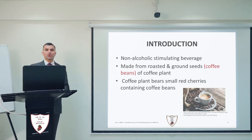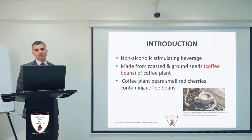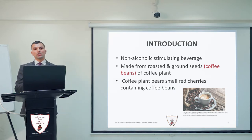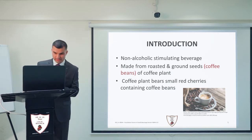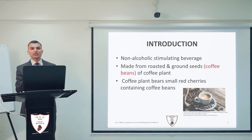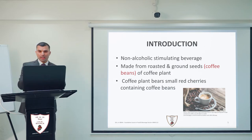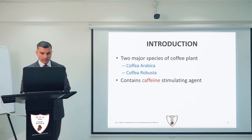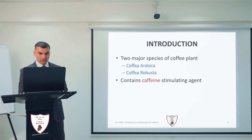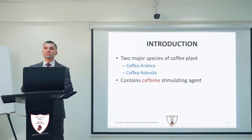Let's see what coffee is. It's a non-alcoholic stimulating beverage which is made from roasting and grinding seeds of the coffee plant, and these seeds are known as coffee beans. These coffee plants bear small red cherry-like fruits which contain coffee beans. There are two major species of coffee plant: Coffea Arabica, which is the most famous one, and Coffea Robusta. Coffee contains caffeine, which is a stimulating agent.